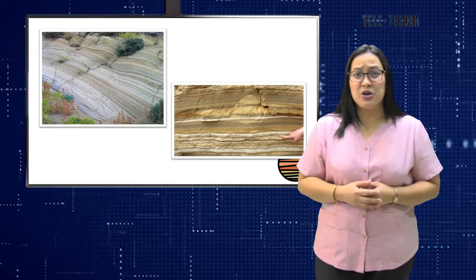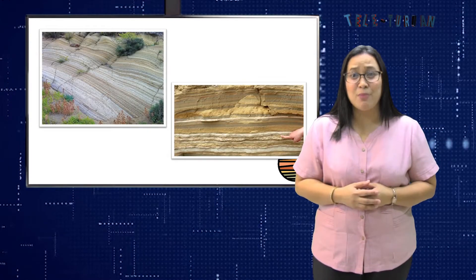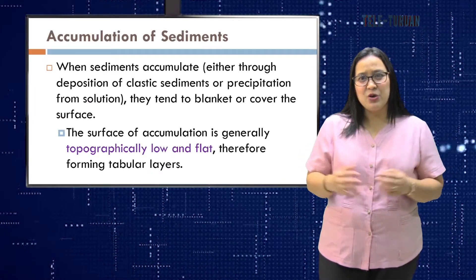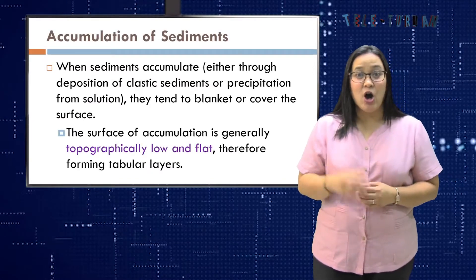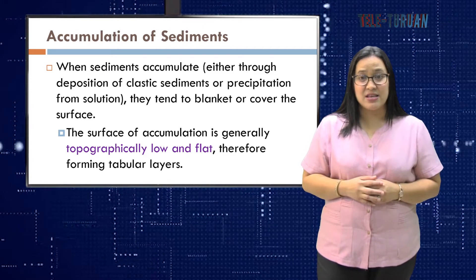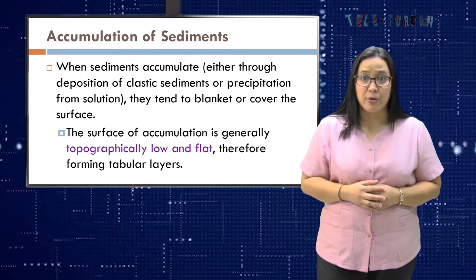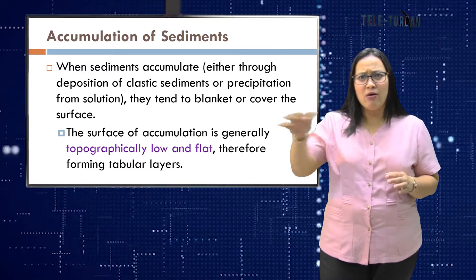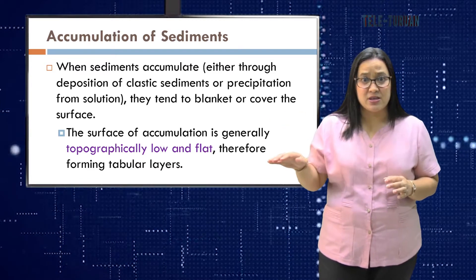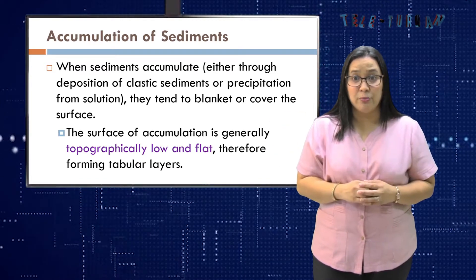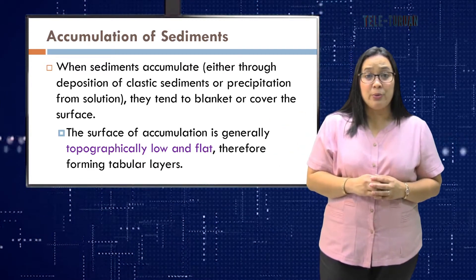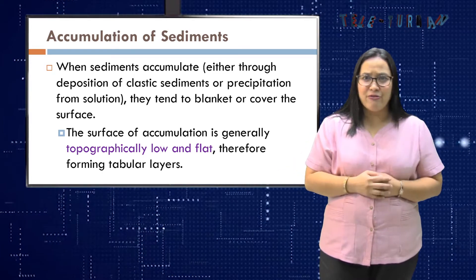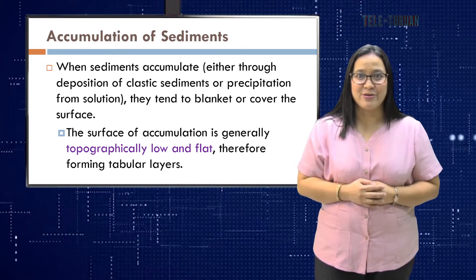So how does sediment accumulate to form layers of rocks? When sediments accumulate, either through deposition of plastic sediments or precipitation from solution, they tend to blanket or cover the surface. The surface of accumulation is generally topographically low and flat, therefore forming tabular layers.